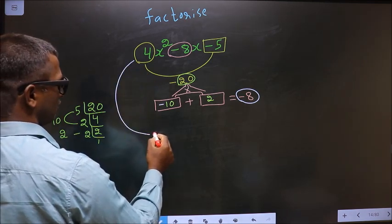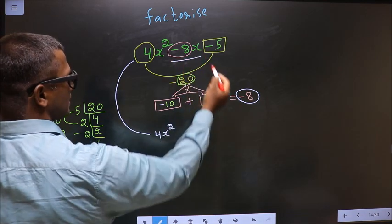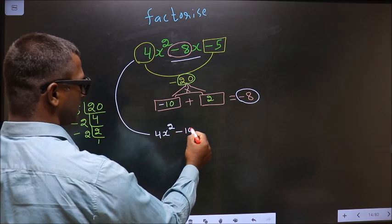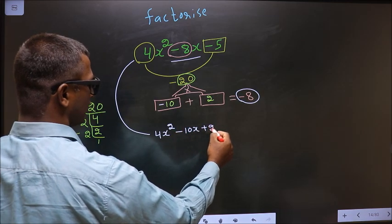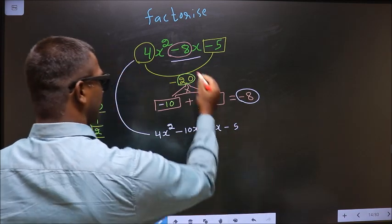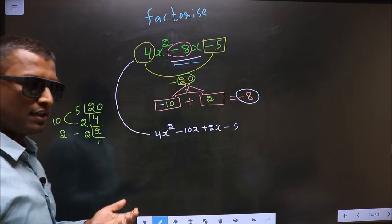Now you change this. In place of -8x, now you should write -10x + 2x - 5. In place of -8x, I have written this.